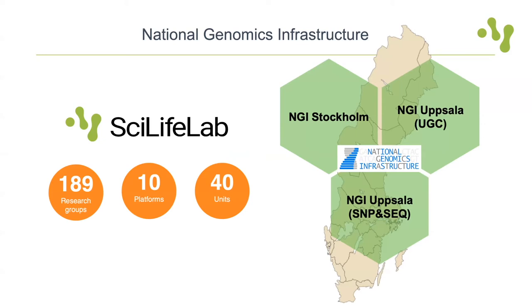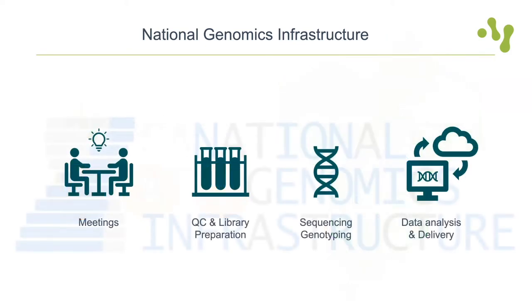The Stockholm site and the SNP and Seek platform primarily use Illumina technology, while the Uppsala Genome Center focuses on other technologies such as PacBio and Ion technology. At NGI, we provide access to technologies for massively parallel sequencing and genotyping at all scales, with associated bioinformatics support to researchers based in Sweden and also outside Sweden. We offer several types of library prep and sequencing methods, one of which is the 10x Visium technology we will be focusing on during this webinar.